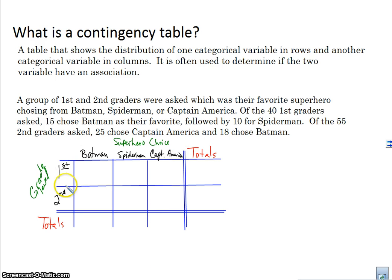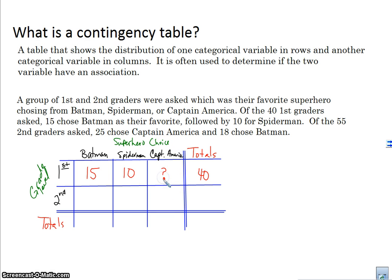Now let's fill in the values. I know that of 40 first graders, 15 chose Batman and 10 chose Spider-Man — so we can figure out how many chose Captain America. For the 55 second graders, 25 chose Captain America and 18 chose Batman.